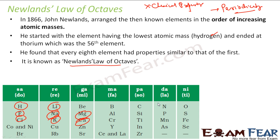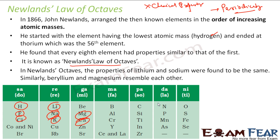For example, lithium and sodium have the same property; similarly, beryllium and magnesium have the same property. He arranged all the elements in the order of increasing atomic mass and found that they follow this periodicity.